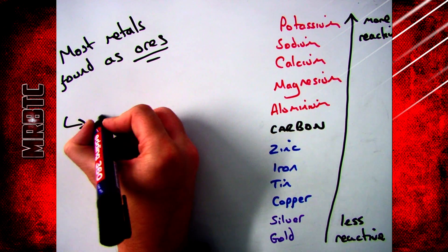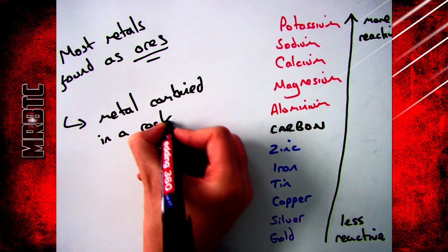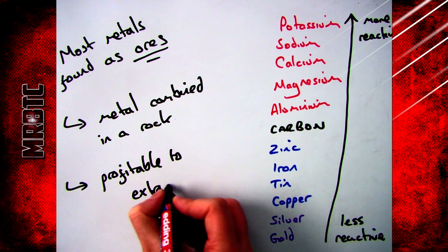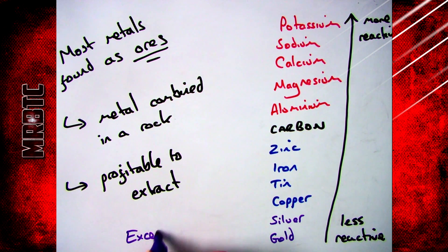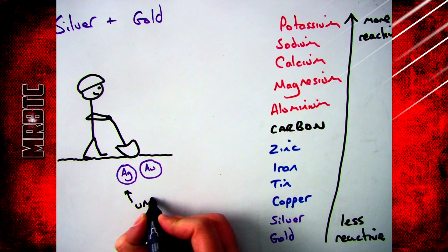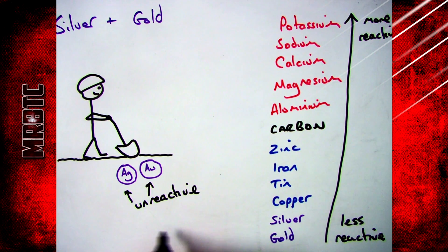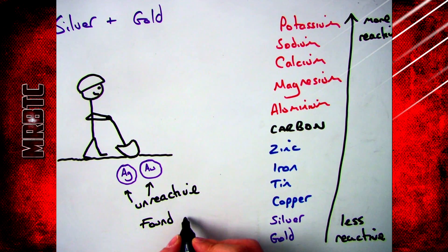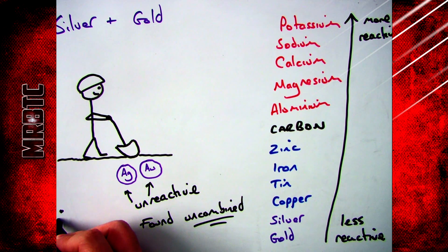You should remember from a previous video that most metals are found in ores. An ore is any rock that contains metal where it's profitable for it to be extracted. The exception to that are silver and gold. Silver and gold are both very unreactive, so they do not react with oxygen, they do not react with anything. So what we say is these are found uncombined in the earth.